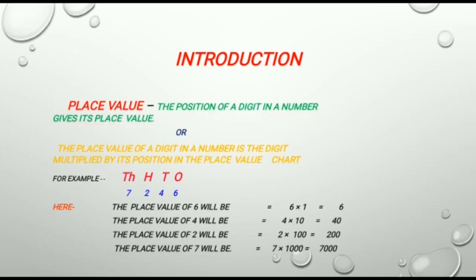To make this more clear, I will show you a place value chart with some digits. This is 1's place, this is 10's place, this is 100's place, and this is 1000's place. And the digits are 6427.